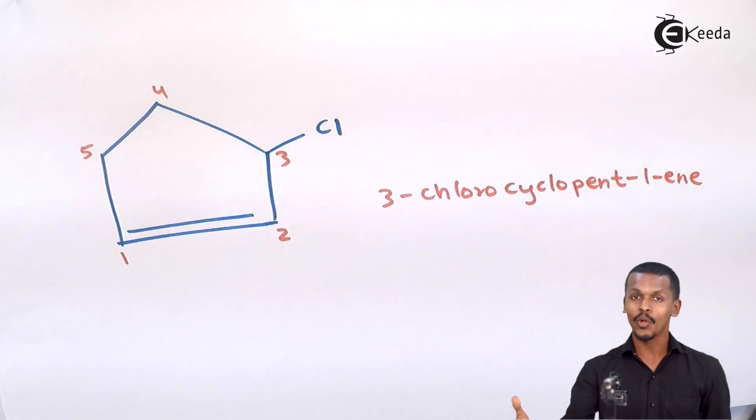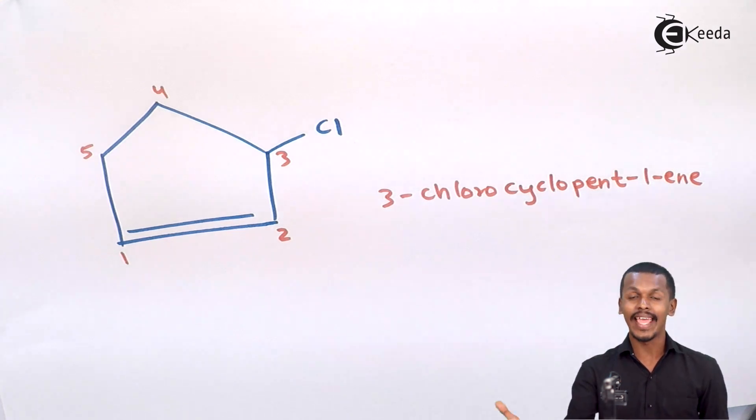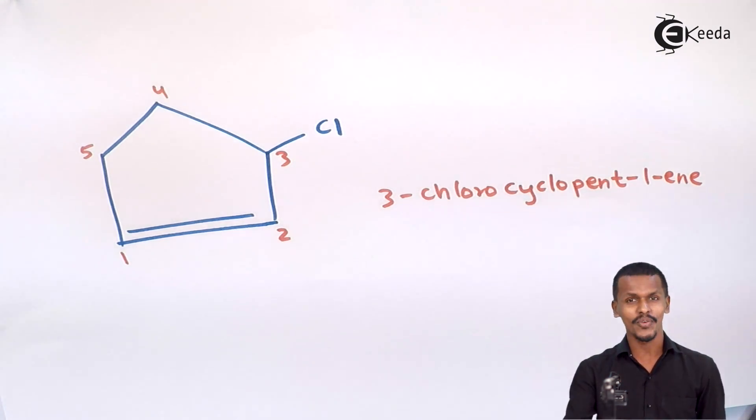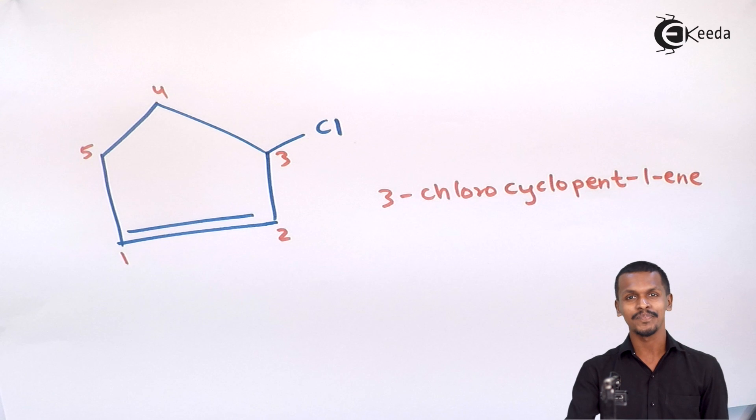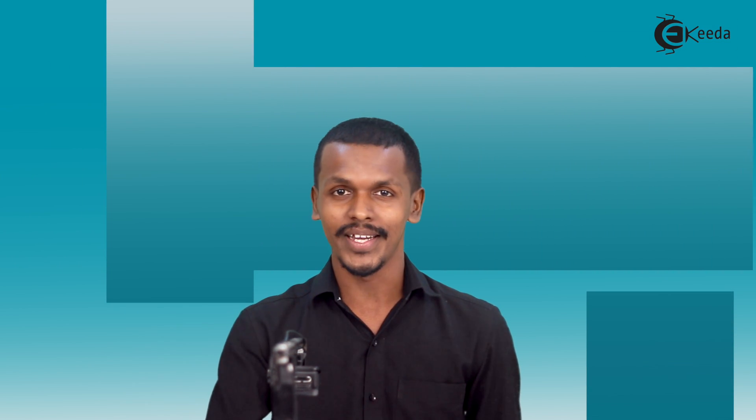These were the rules of IUPAC nomenclature for alicyclic compounds, illustrated with several examples. Thank you for watching — I hope you found this video helpful. Please practice more nomenclature problems for alicyclic compounds, share this video with friends, and don't forget to subscribe to the IGEDA channel.